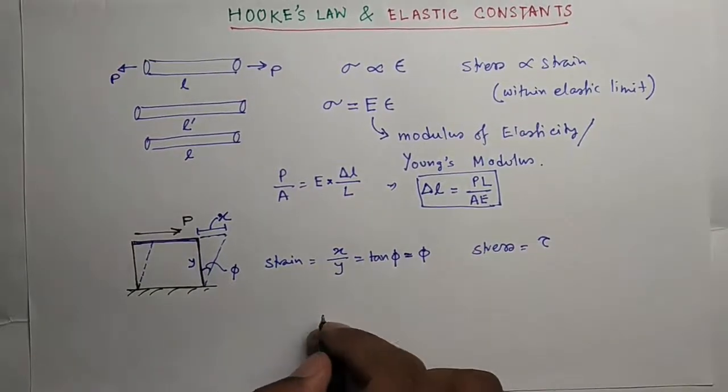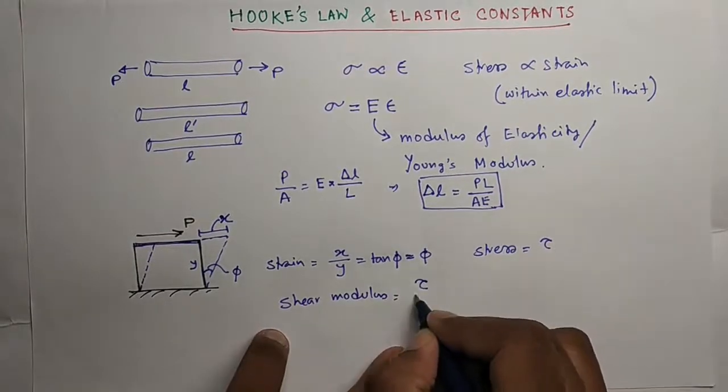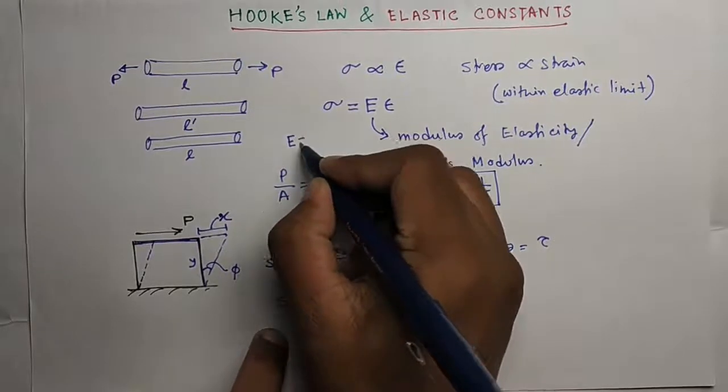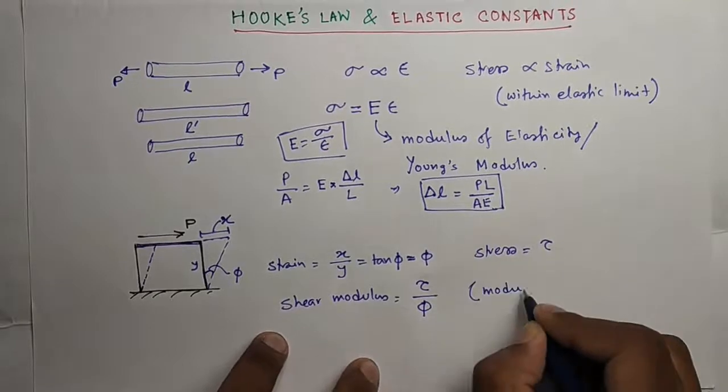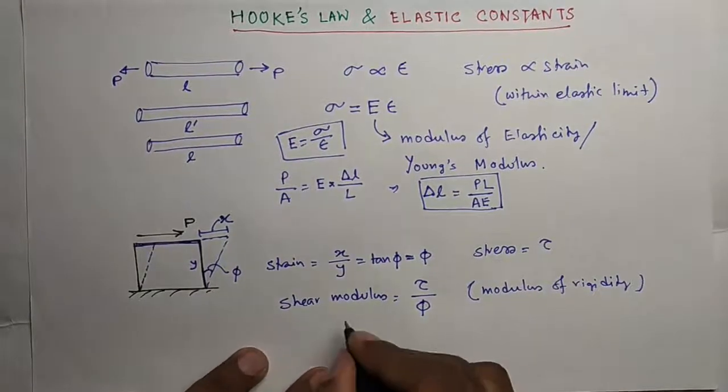For this shear, the modulus is called shear modulus. It is shear stress by strain phi. The modulus of elasticity is stress by strain. Shear modulus, also called modulus of rigidity, is denoted by G.